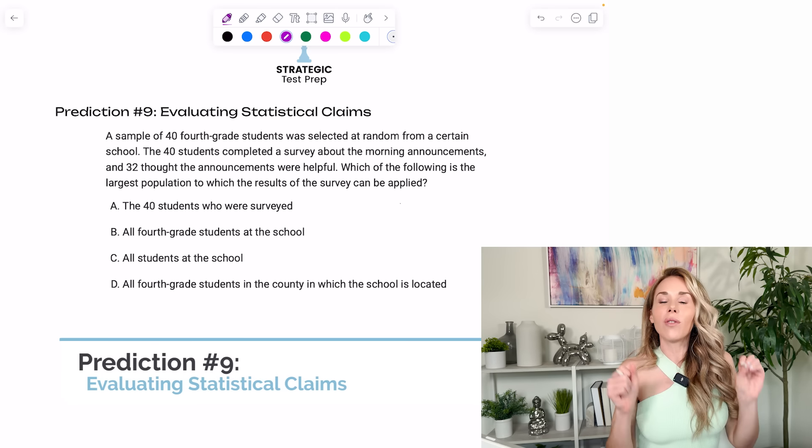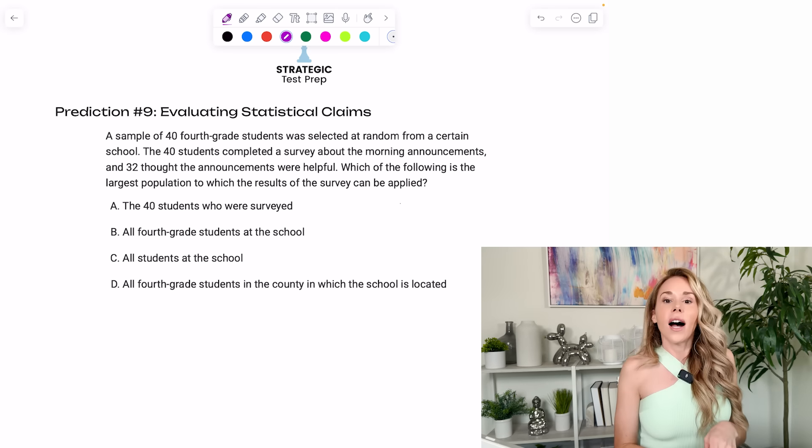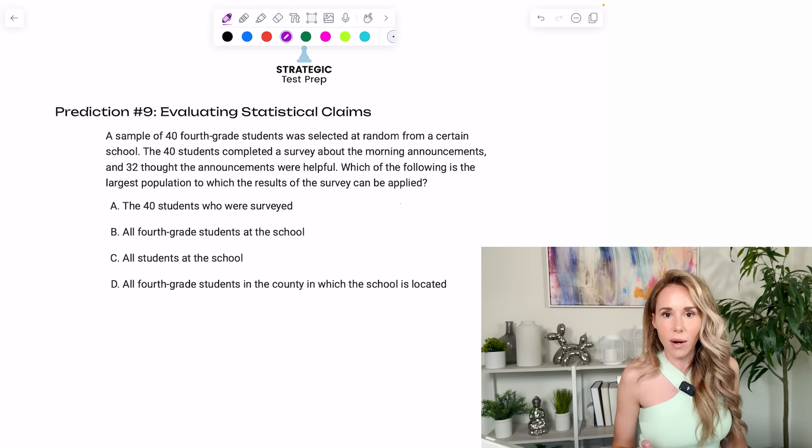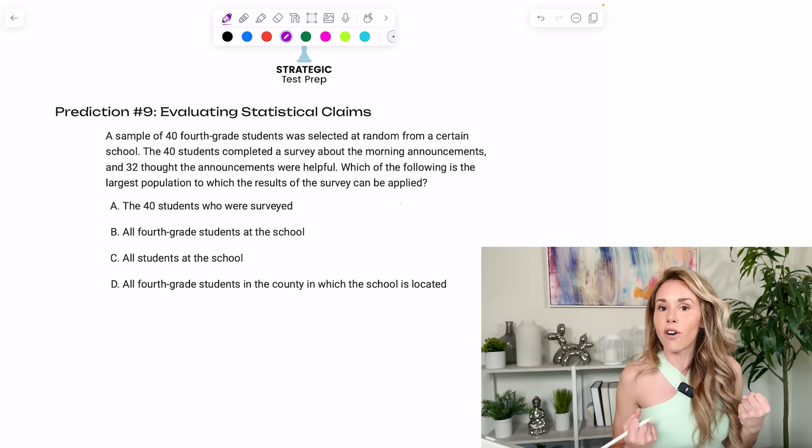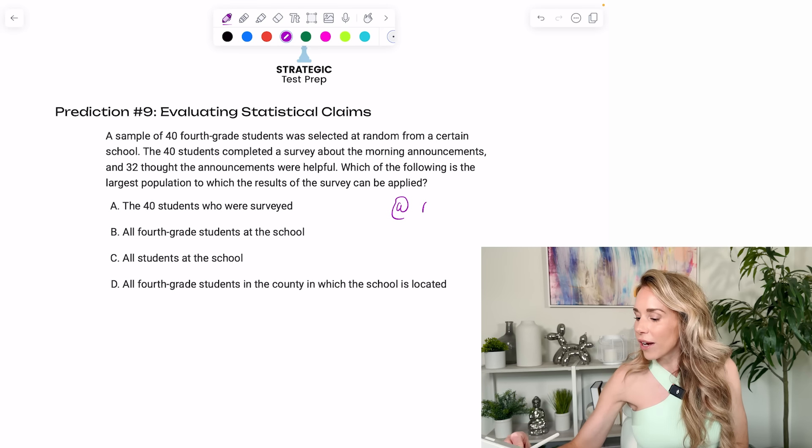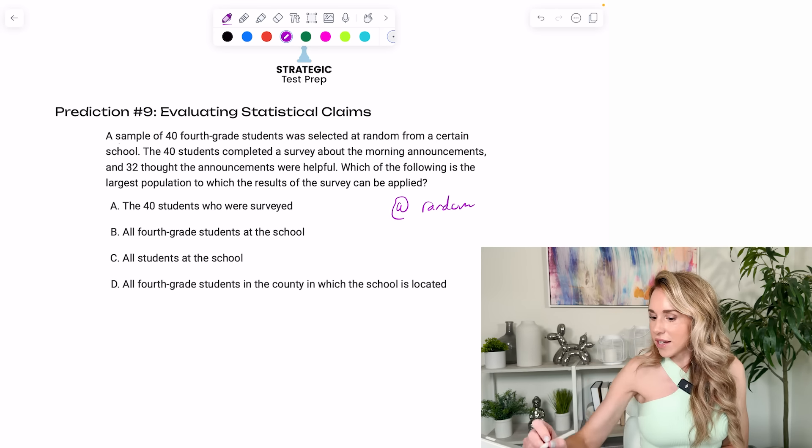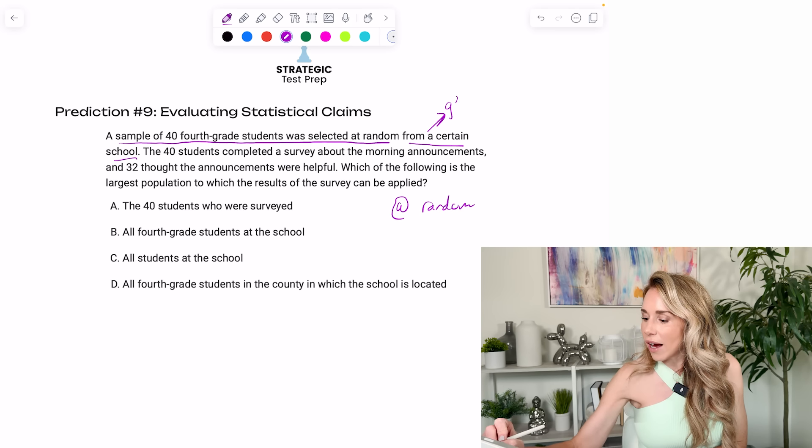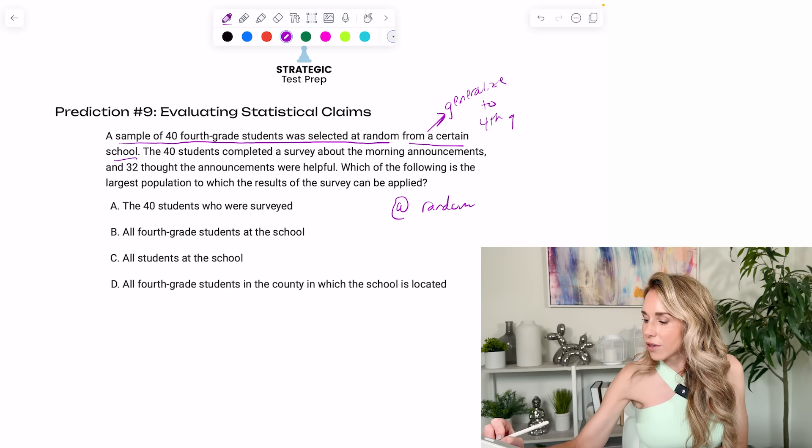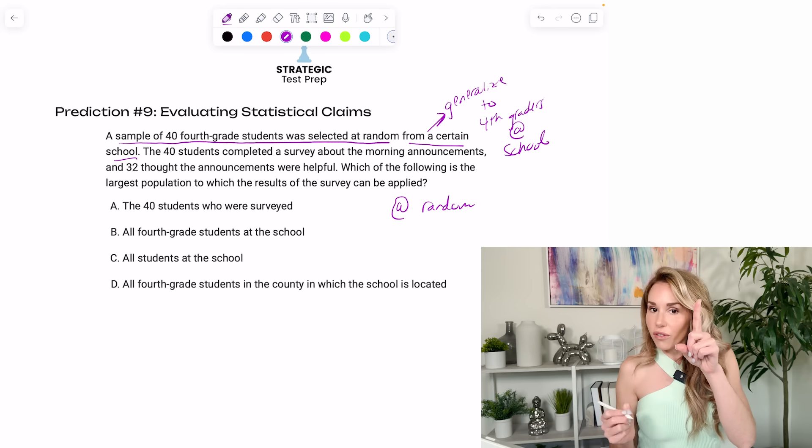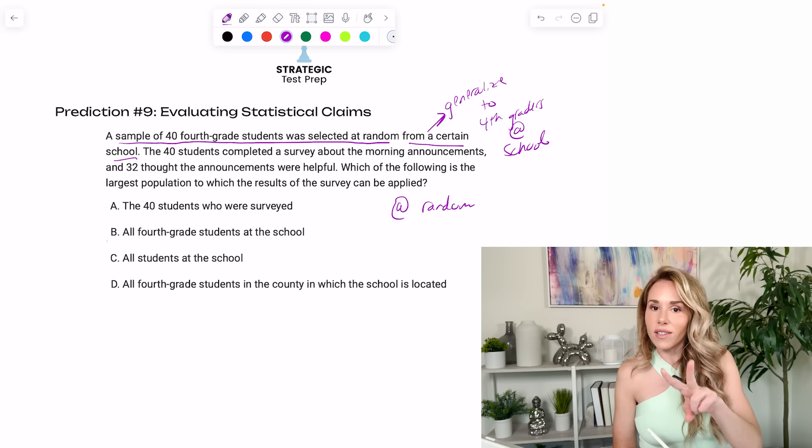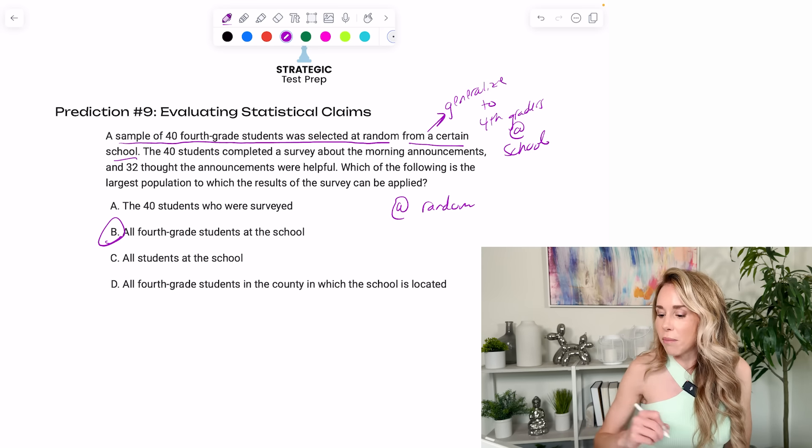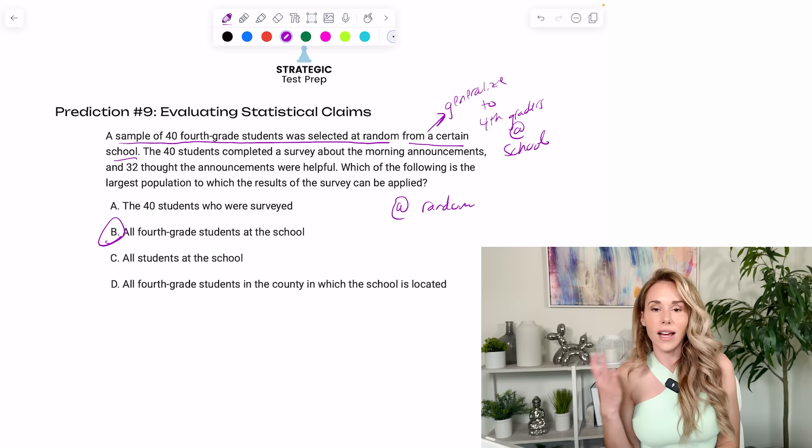My ninth prediction is they will ask you a question that's called evaluating statistical claims. Essentially, they're going to give you some kind of a study and ask what the study can be generalized to. They're going to talk about like selecting a sample. So here's the thing, whatever the sample is being selected at random from is what you can generalize to. So you want to look for the at random statement. And it looks like it says a sample of 40 fourth grade students was selected at random from a certain school. So that means I can only generalize to the fourth graders at that school because they only selected from fourth graders and they only selected from that one school. So I can't generalize to other schools and I can't generalize to other grades. So when I look at the answers, the answer is going to be B. All fourth grade students at the school is the only generalization I can make from that sample.